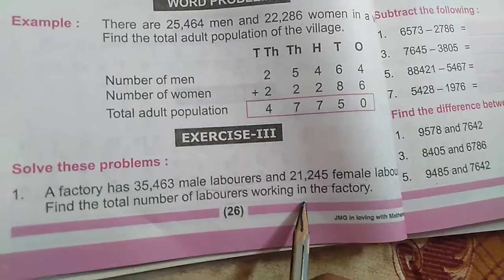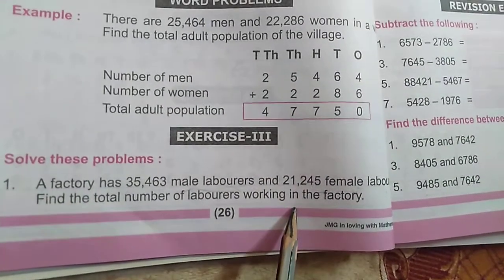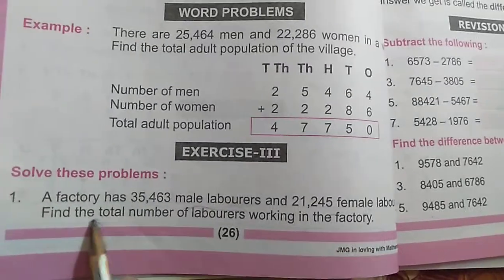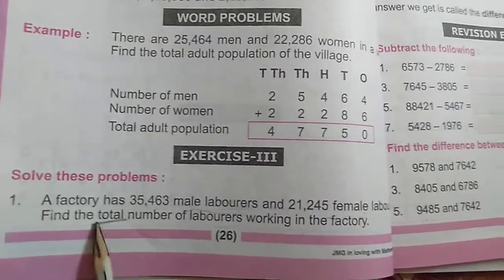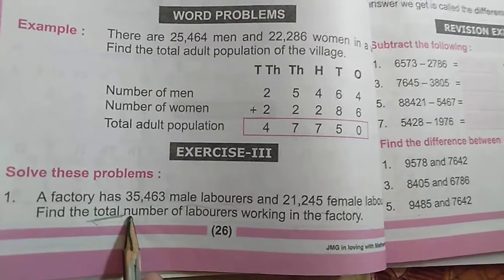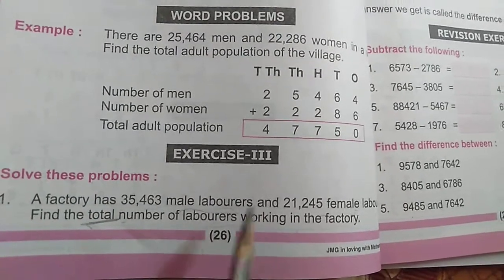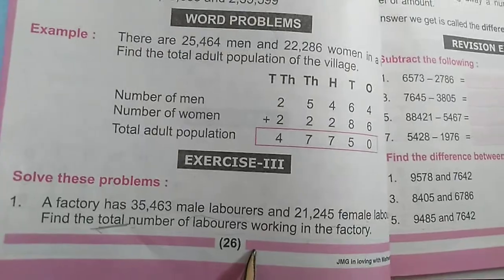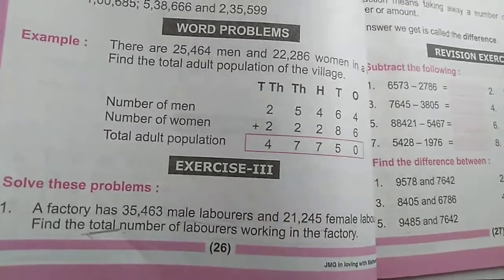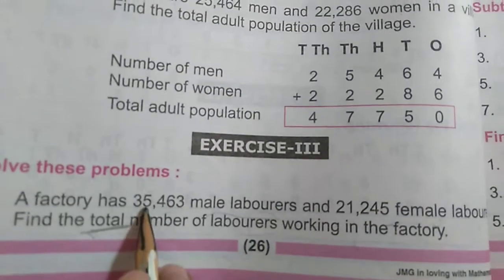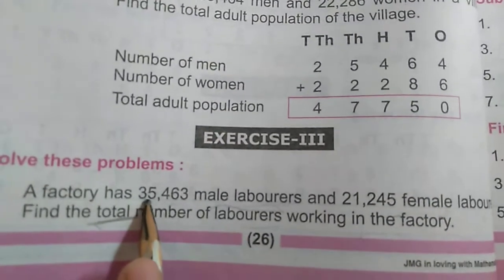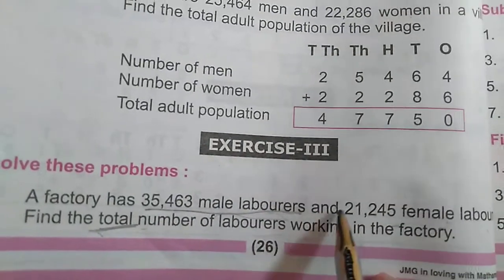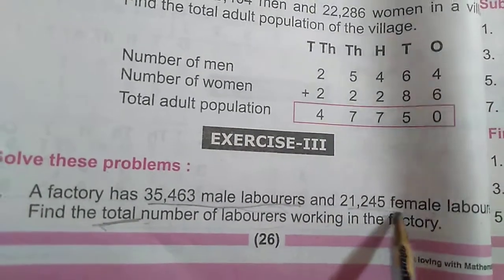When addition word problems come, we find keywords like 'total', 'find the sum', or 'all together'. So we will perform addition. First, you have to underline what is given — male laborers are given and female laborers are given.